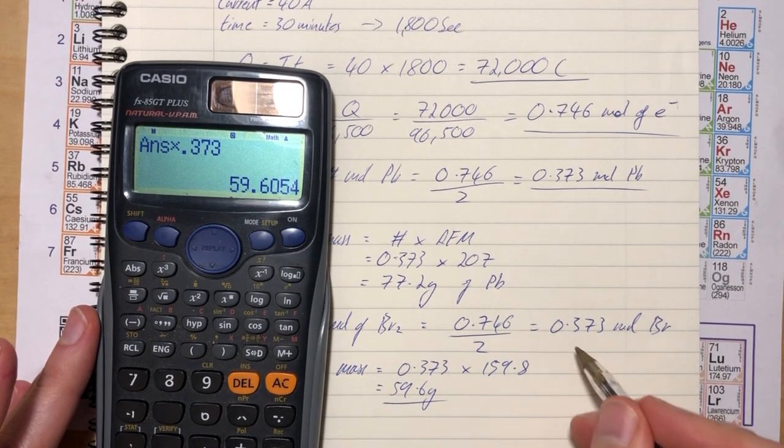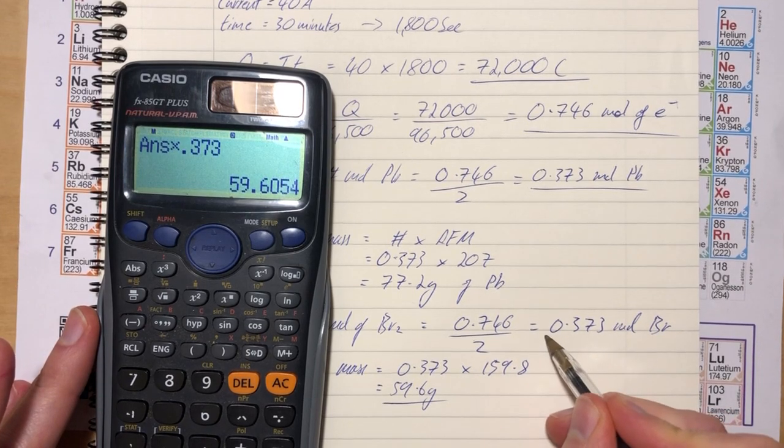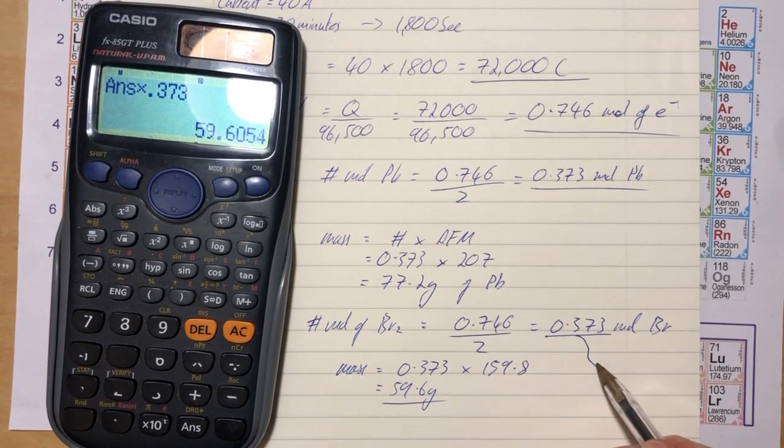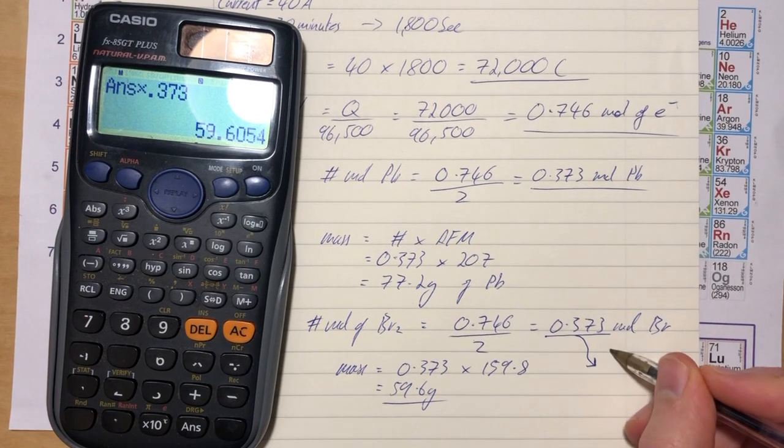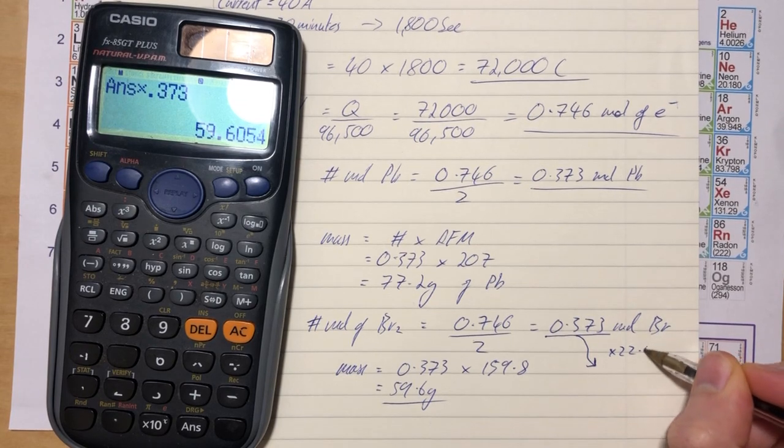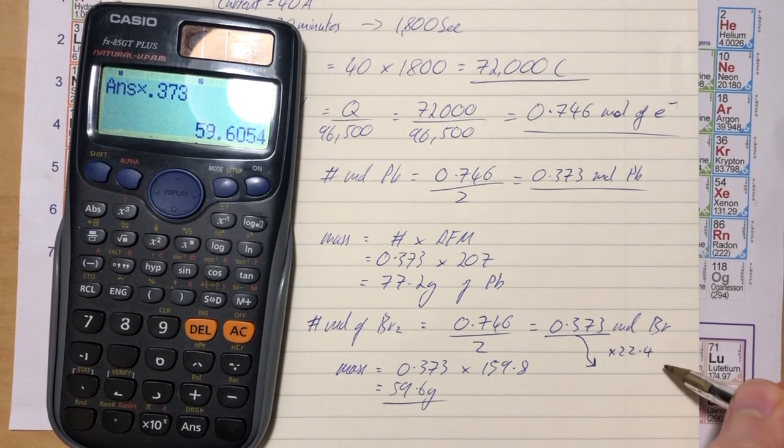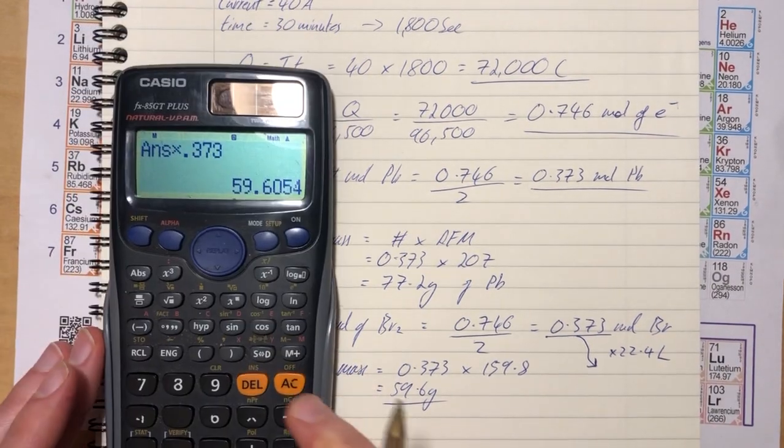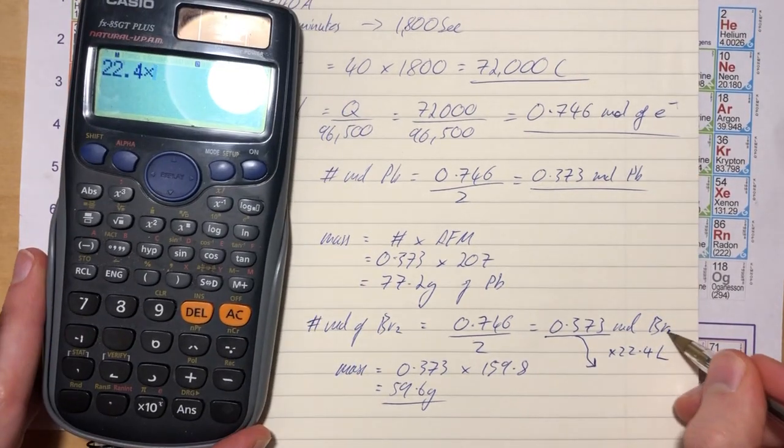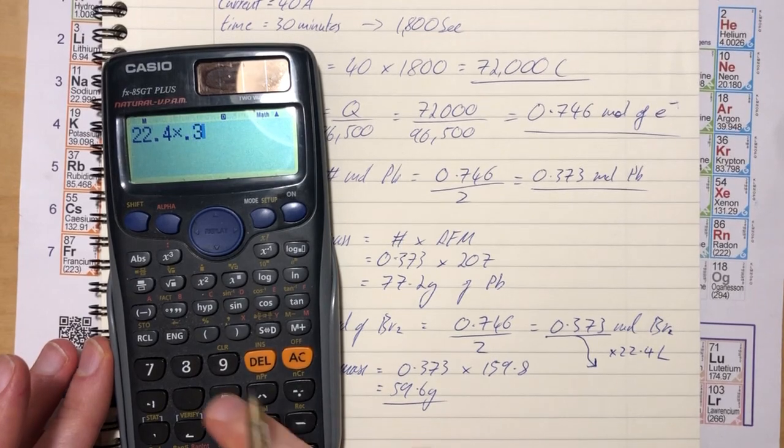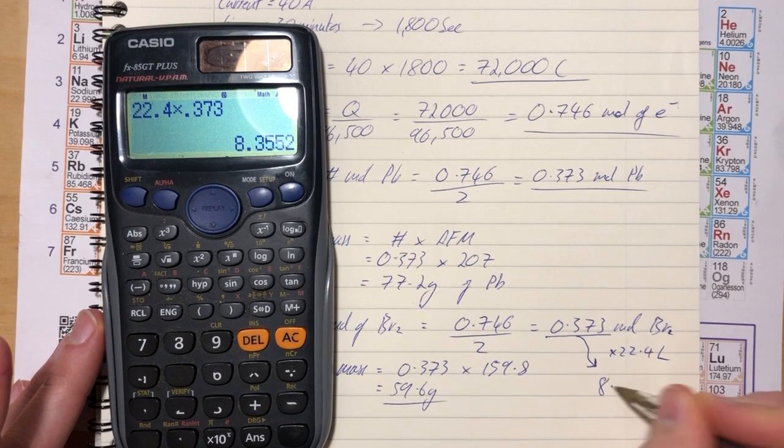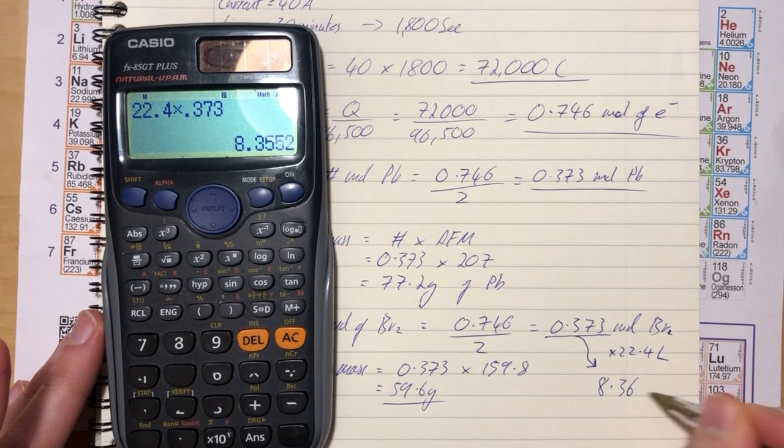Finally, since bromine is a gas, let's find the volume. Remember that one mole of any gas occupies 22.4 litres at standard conditions. So volume = 22.4 × 0.373 moles of Br₂ = 8.36 litres.